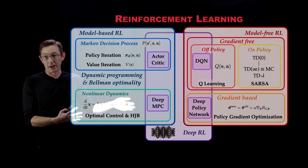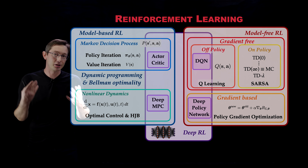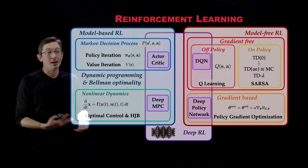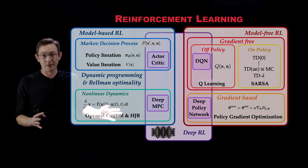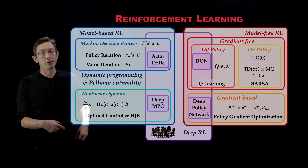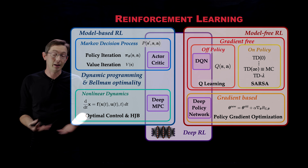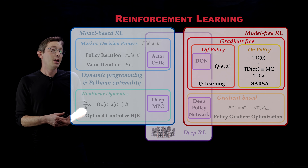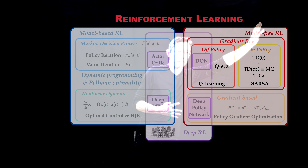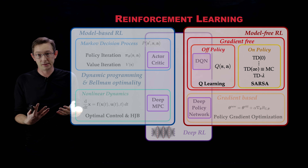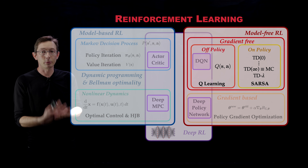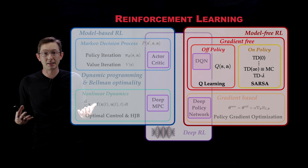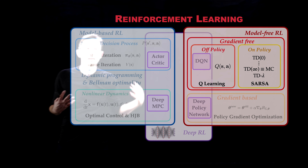Welcome back. Today we're continuing this lecture series on reinforcement learning, which is one of my favorite topics at the intersection of control theory and machine learning, and also at the intersection of biological learning. It's a really rich topic with decades of development, and recently there's a lot of renewed interest because of its combination with deep neural networks. Today I'm going to focus primarily on model-free reinforcement learning, specifically on gradient-free methods, culminating in Q-learning — an off-policy, gradient-free method.